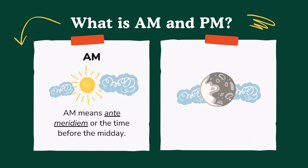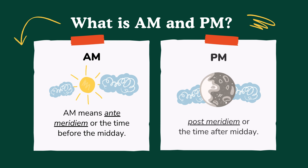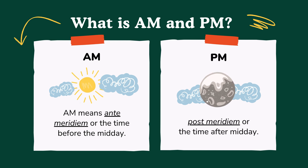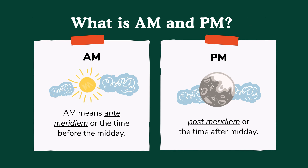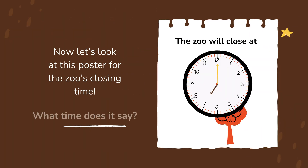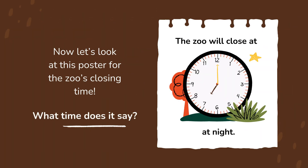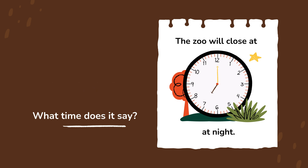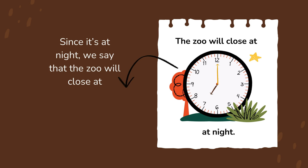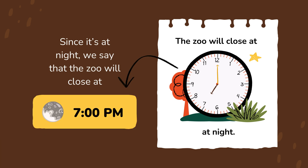What is AM and PM? AM means ante-meridiem, or the time before midday. PM means post-meridiem, or the time after midday. Now let's look at the poster for the zoo's closing time. Since it's at night, we say that the zoo will close at 7 PM.